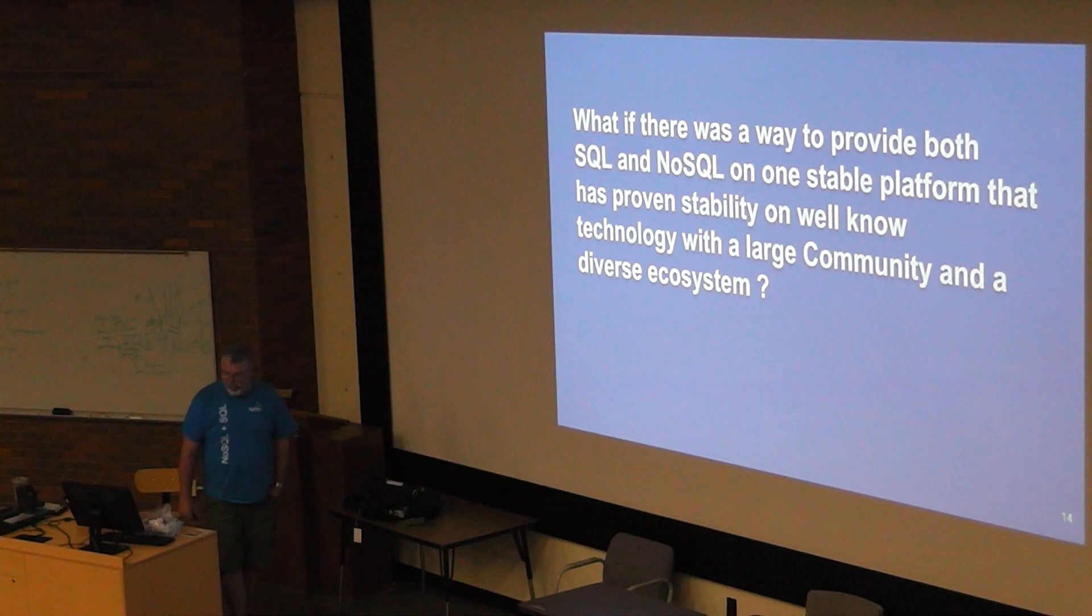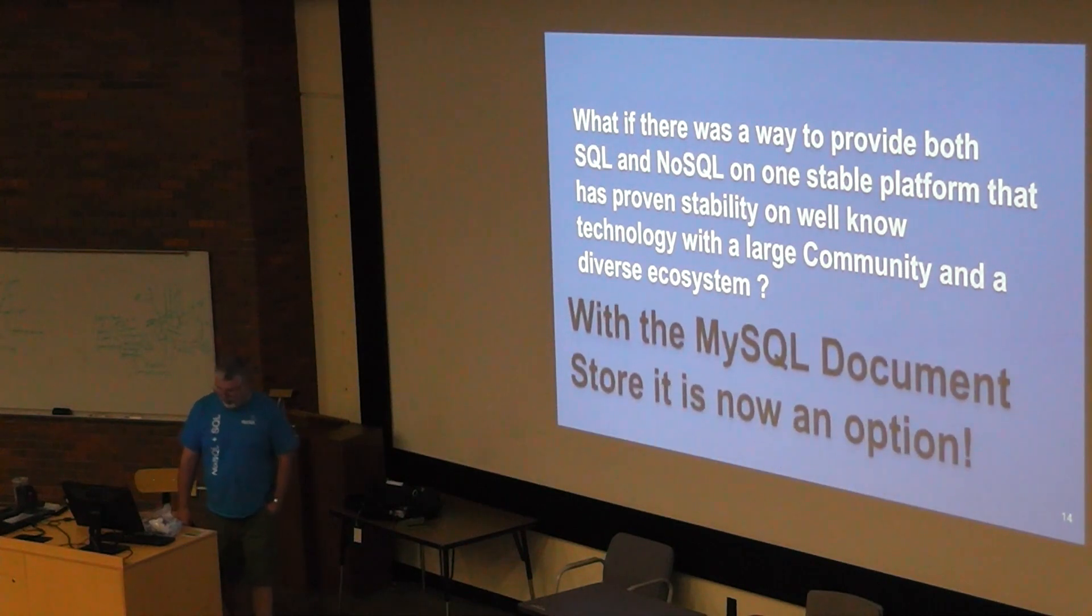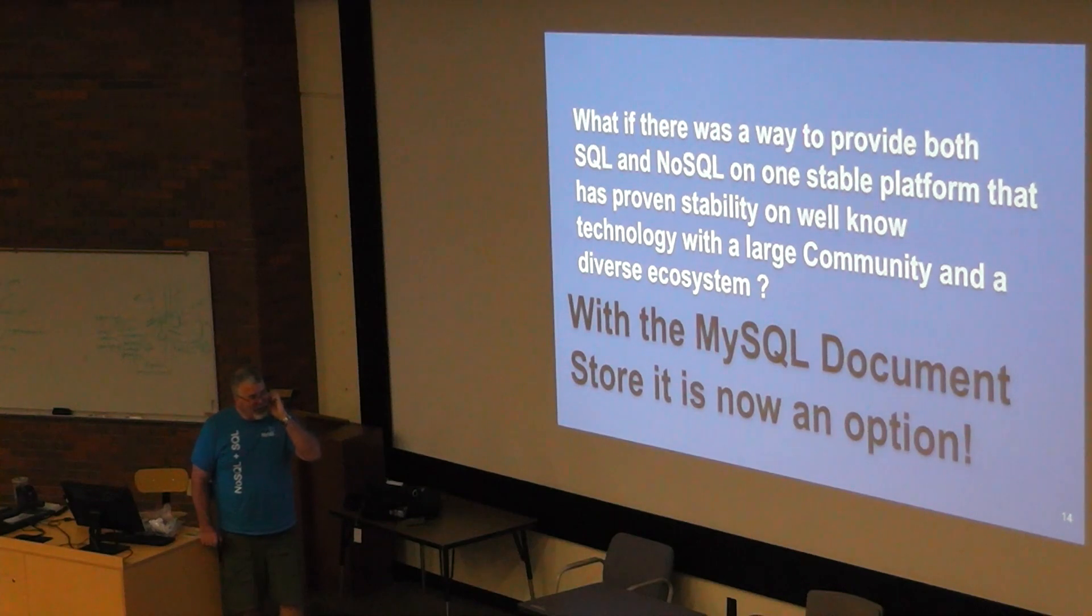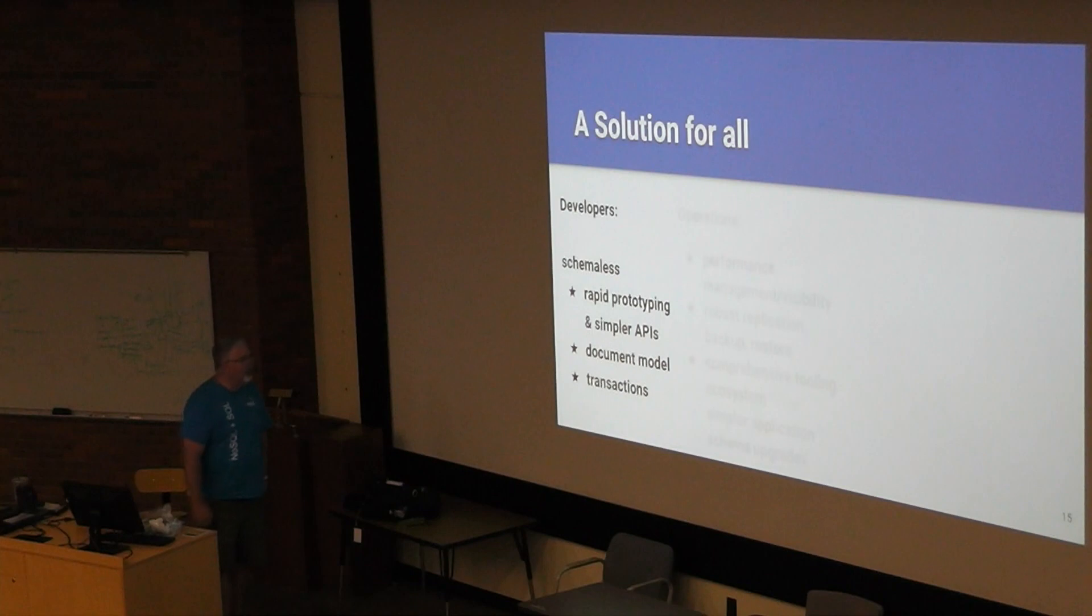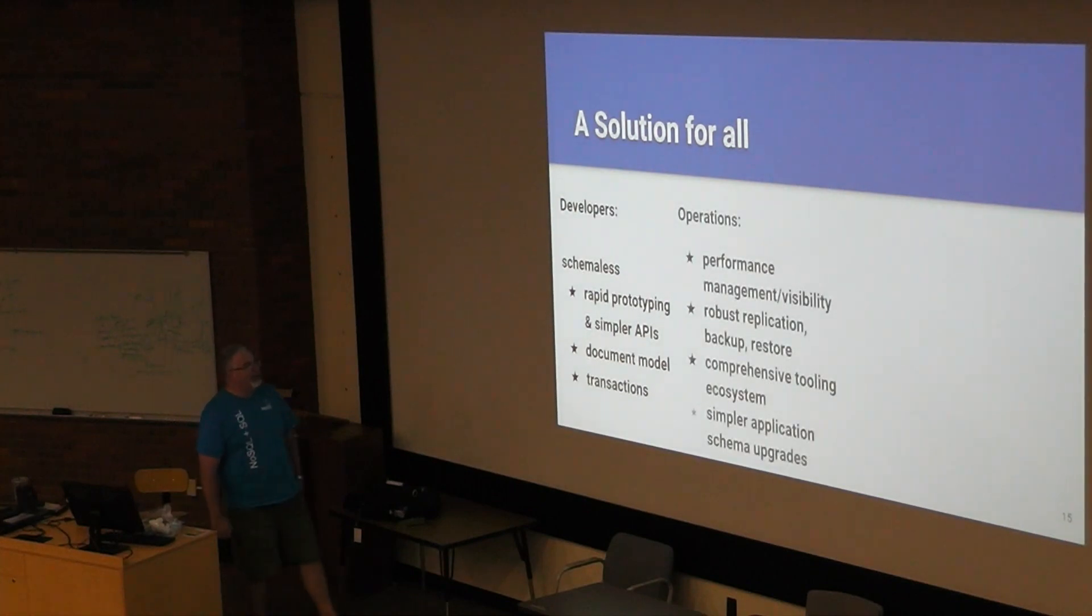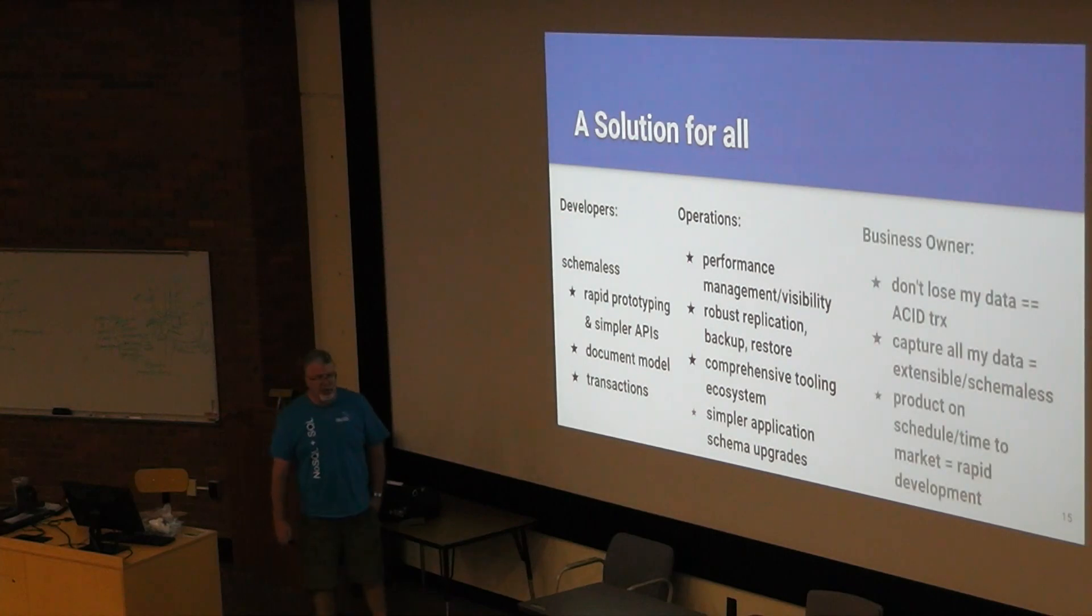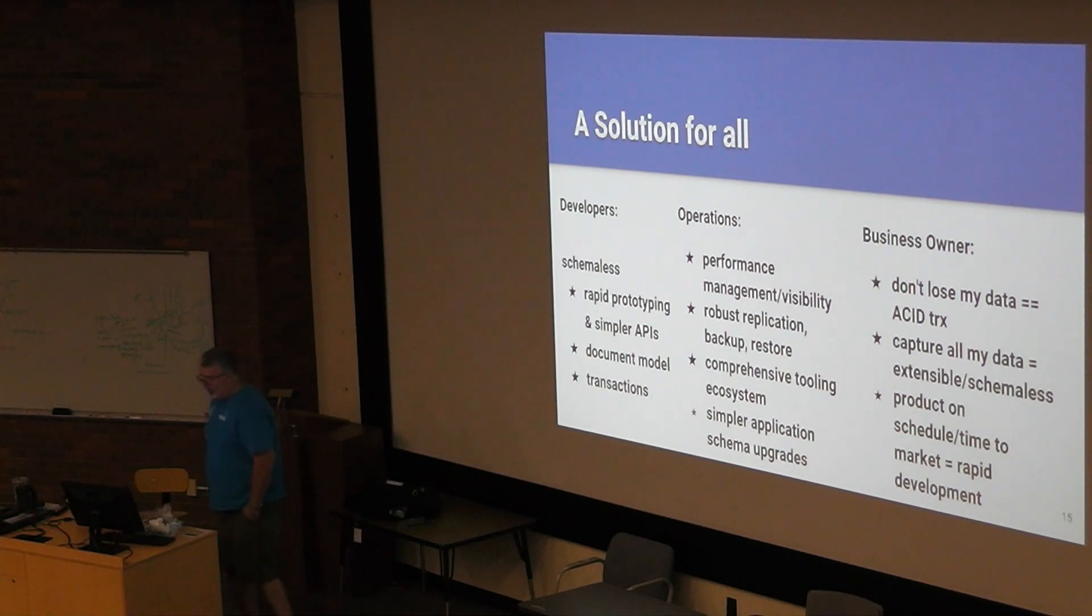Now, this brings up a piece of the patch. Where DBAs see data like this. Where everything's been normalized, set into separate tables, and recording. End developers don't really see it that way. They want everything in some sort of document where they have little subsections they can get to. So, what if there's a way where we can give each group what they want? Well, starting with MySQL 5.7 about three years ago and improved with MySQL 8.0. We've done that. So, the developers get all the schemeless rapid stuff that they want in the document model. They get transactions. The DevOps folks get performance, robust replication on a known platform. And business owners are happy because they're not using their data. And it's easy to keep on time and schedule.